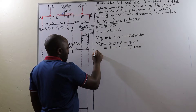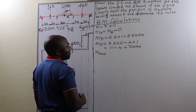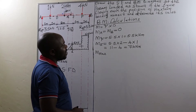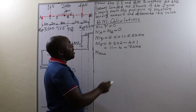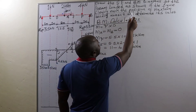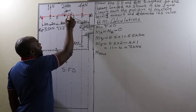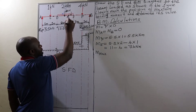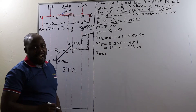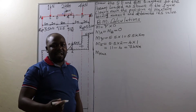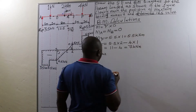Then we calculate the value of the maximum bending moment. Remember, our equation had also asked us to clearly mark the position of the maximum bending moment, which we marked as point M, because that is the point where shear force is zero. And when shear force is zero, bending moment is maximum.